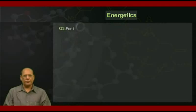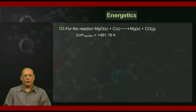Question number three. For the reaction MgO(s) + C(s) → Mg(s) + CO(g), ΔH° of this reaction equals +491.18 kJ/mol, and ΔS° of the reaction equals +197.67 J/(K·mol), at T = 298 K.